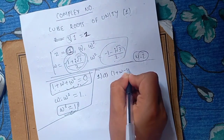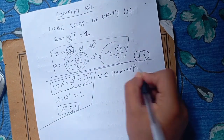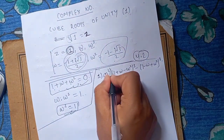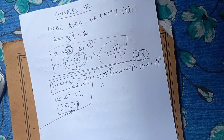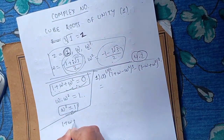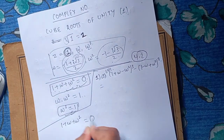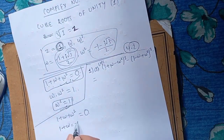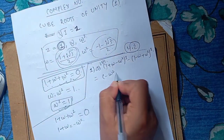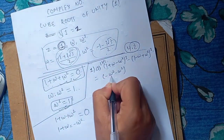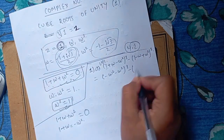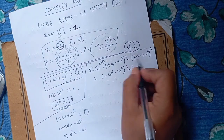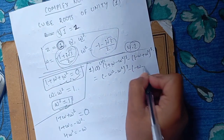1 plus omega minus omega square cubed, minus 1 minus omega plus omega square cubed. Now we will call it LHS. 1 plus omega plus omega square equals 0, so 1 plus omega is minus omega square. 1 plus omega, 1 plus omega, 2 minus omega.